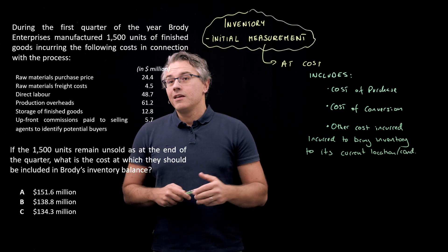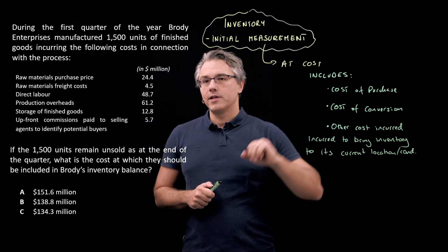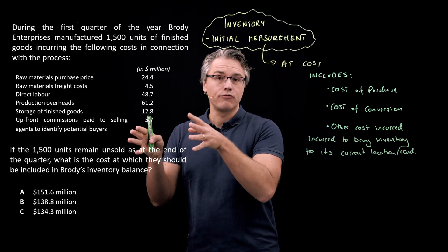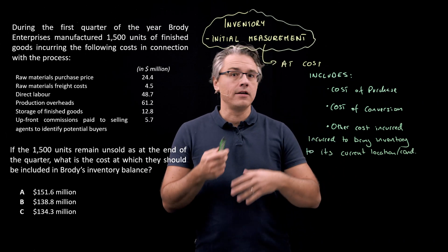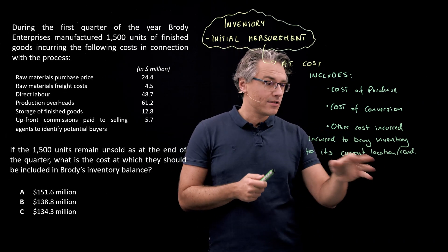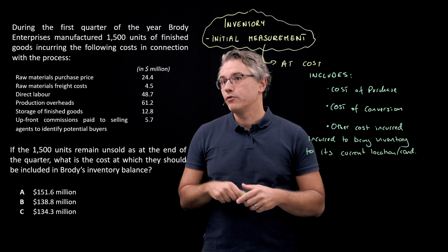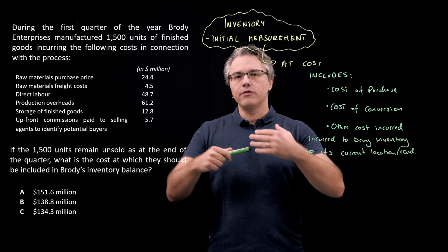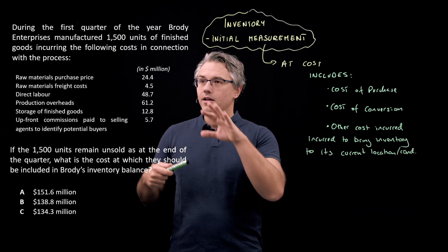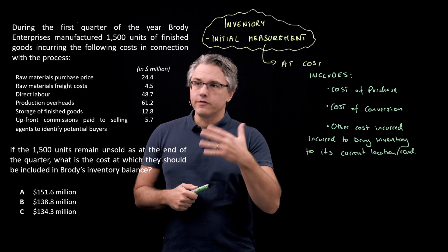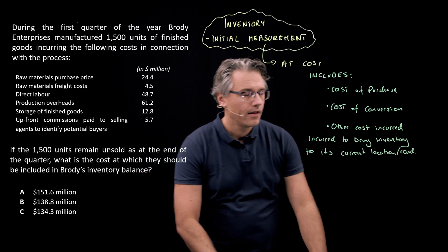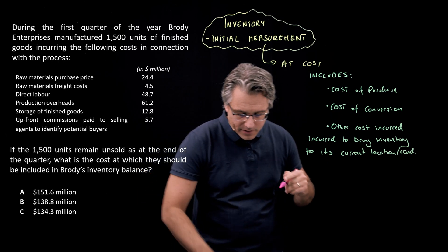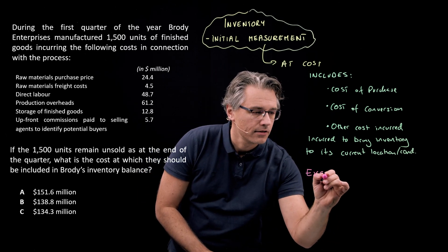For example, if we purchased raw materials, that's a cost of purchase. However, in order to bring those raw materials into our factory, we needed to incur some transport or freight costs — so those would also be included. Then we converted the raw materials into finished goods, which involved labor and production overheads. Now let me write what we don't include — what this cost actually excludes.